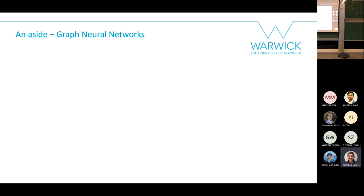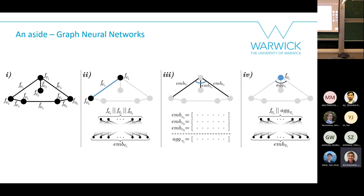This task is on graphs, and graphs are tricky for standard neural networks, which typically need a flat vector or matrix input. So we use graph neural networks, which were developed to handle graph-structured data. They've been built up over the years into quite sophisticated architectures.